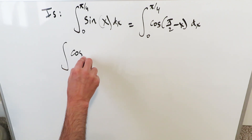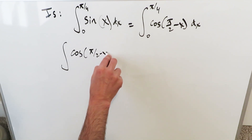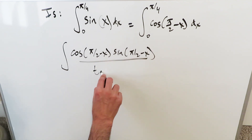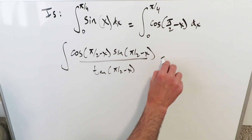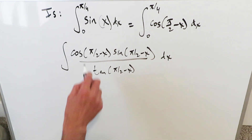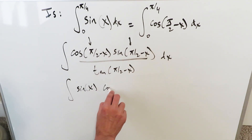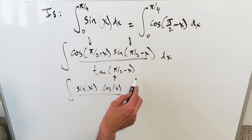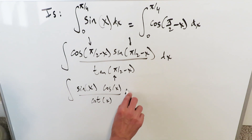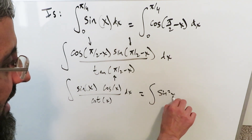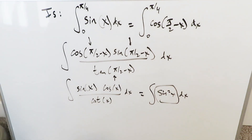I'll allude to this but not show it fully, since the purpose of this video is complete. You could see a function like cosine(π/2 − x) times sine(π/2 − x) divided by tan(π/2 − x), and be asked to integrate it. Using co-function identities: cosine(π/2 − x) = sine(x), sine(π/2 − x) = cosine(x), and tan(π/2 − x) = cot(x). Since cot(x) = cosine(x)/sine(x), simplifying yields sine²(x) dx.